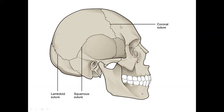Sutures are the connections between bones in your skull — for example, the parietal bone, occipital bone, and frontal bones are connected. These lines are called sutures, such as the coronal suture, the squamous suture, and the lambdoid suture. Fibrous tissues develop between these bones so the bones are tightly joined and will not move.